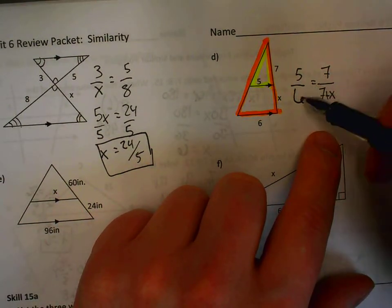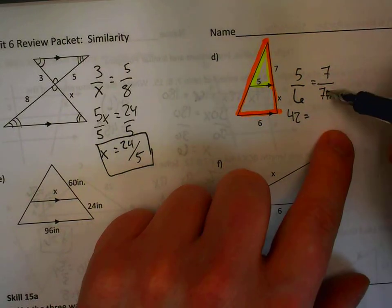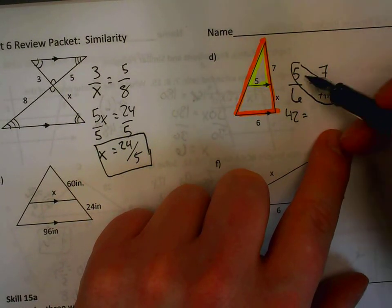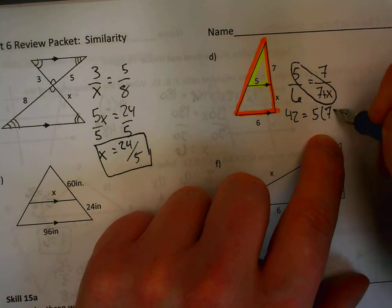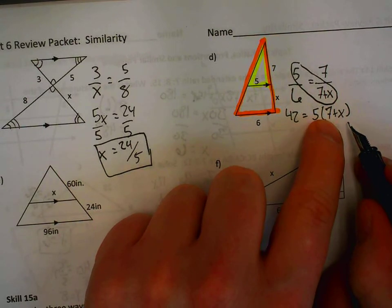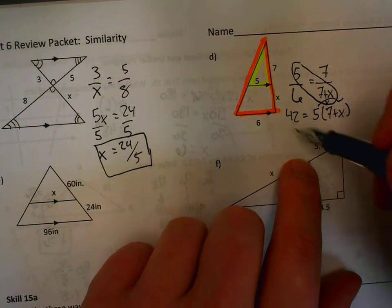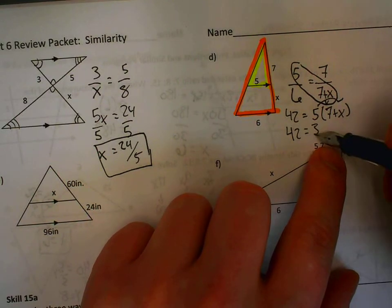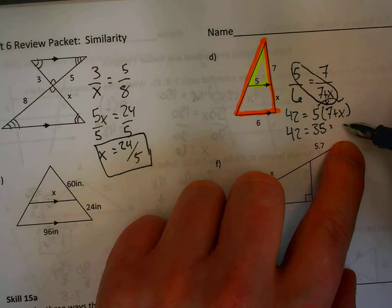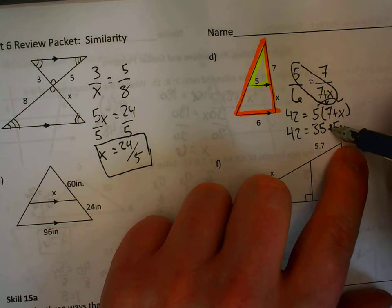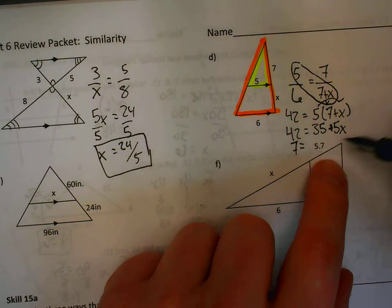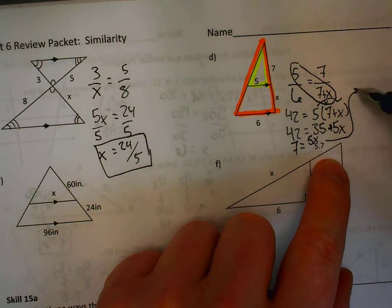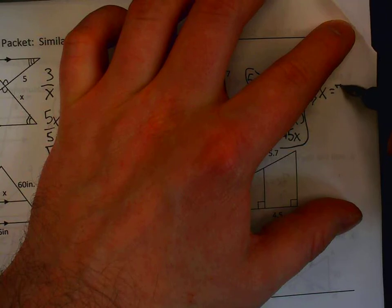From here, cross multiply. 6 times 7 would be 42. And when we cross multiply here, 5 and the 7 plus x, we have to remember to distribute the 5 to both of these terms, the 7 and the x. One way you can write that is by putting the 5 outside parentheses with 7 plus x on the inside, and then using the distributive property to simplify. 5 times 7 would be 35. 5 times x would be 5x. From here, subtract 35 on both sides. That would give us 7 equals 5x. And then divide by 5. 7 divided by 5 would be 7 fifths.